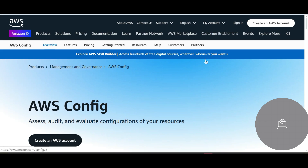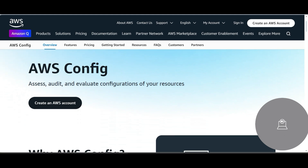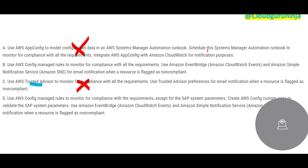We need to use something that makes use of the AWS Config tool, because it will help with assessment and audit — which is what the question is asking about — and evaluation of configuration resources. Options B and D both make use of AWS Config. Option B uses Config managed rules to monitor compliance and then uses EventBridge and SNS for email notification.